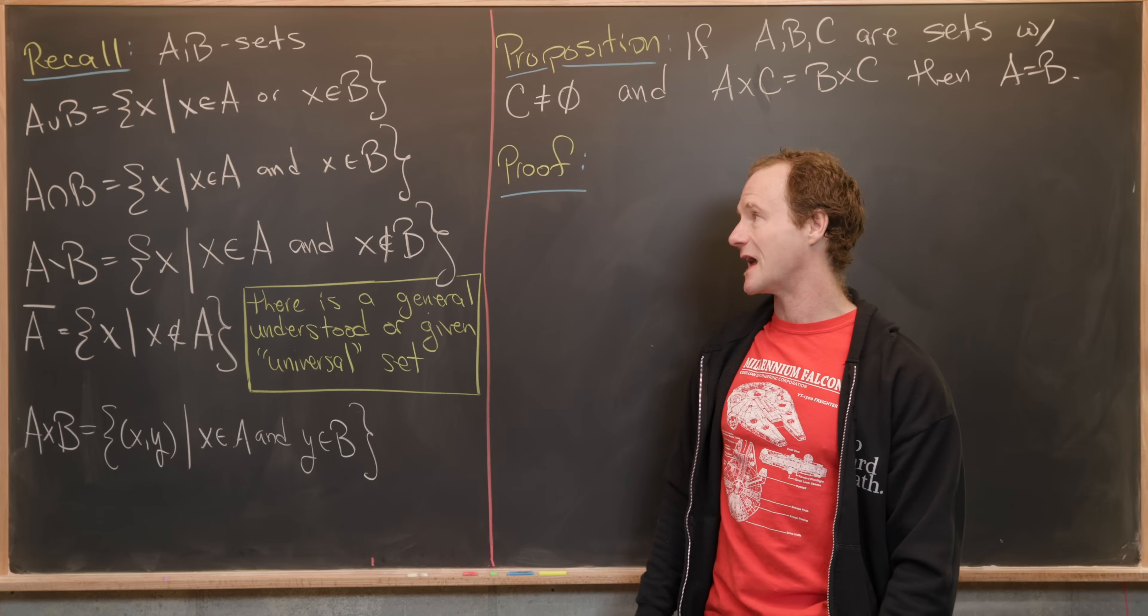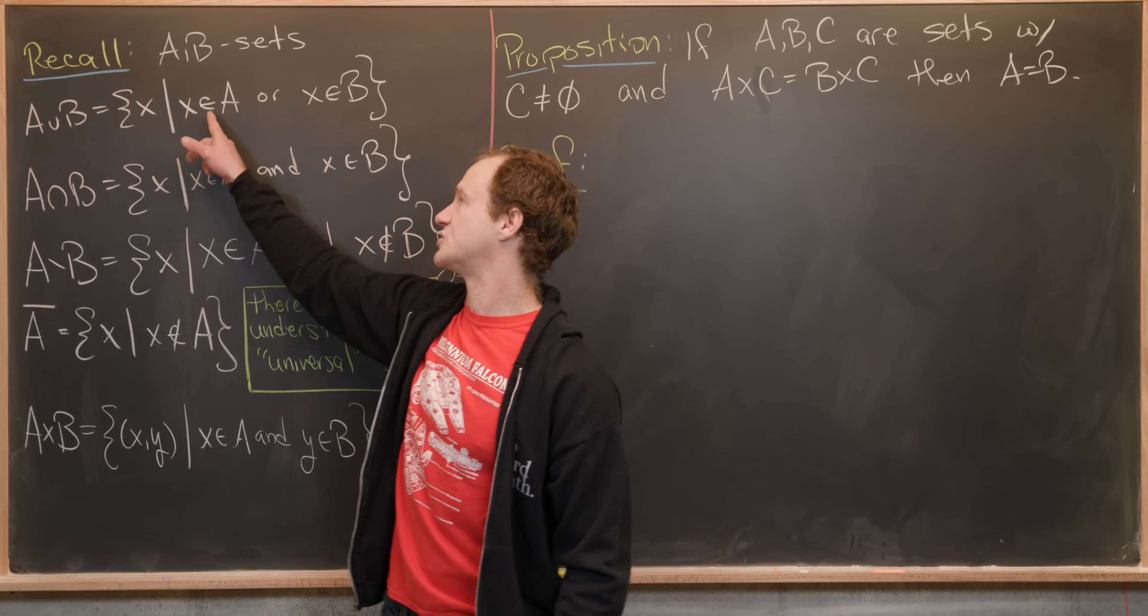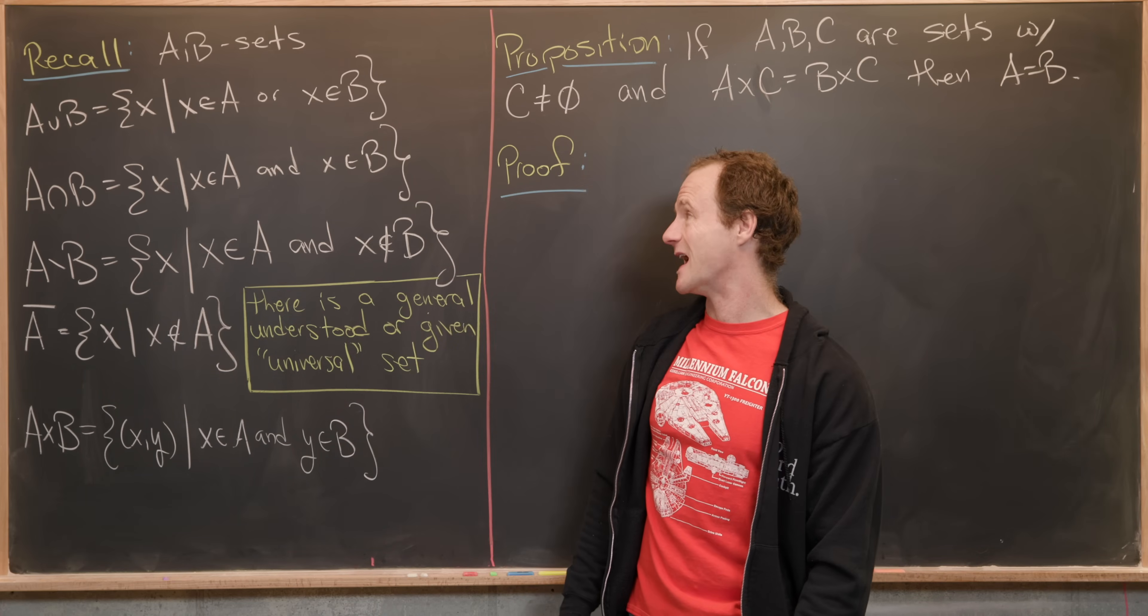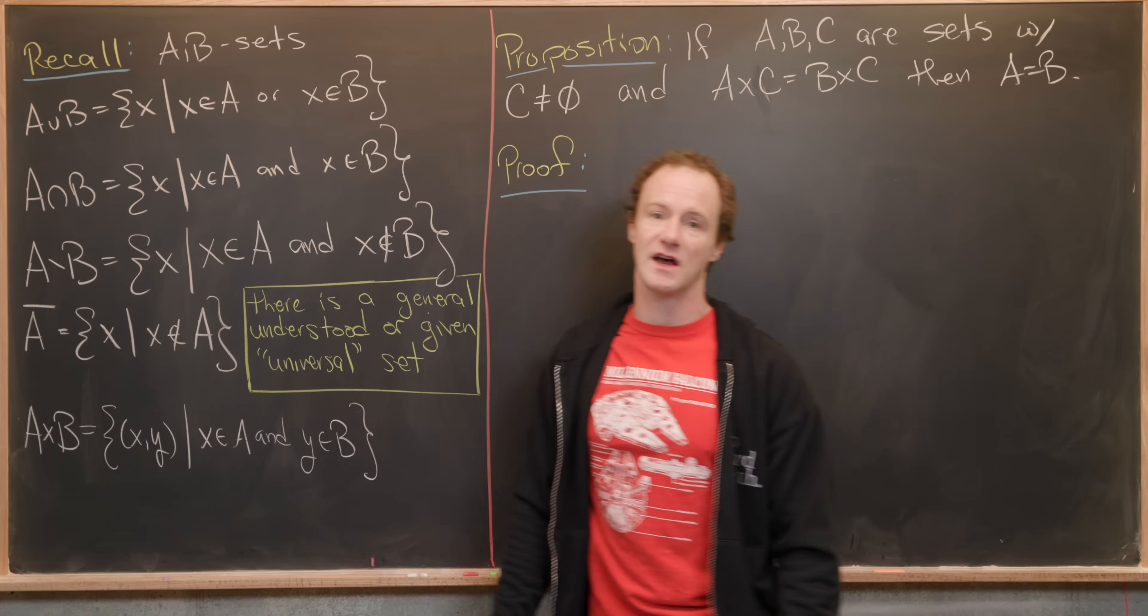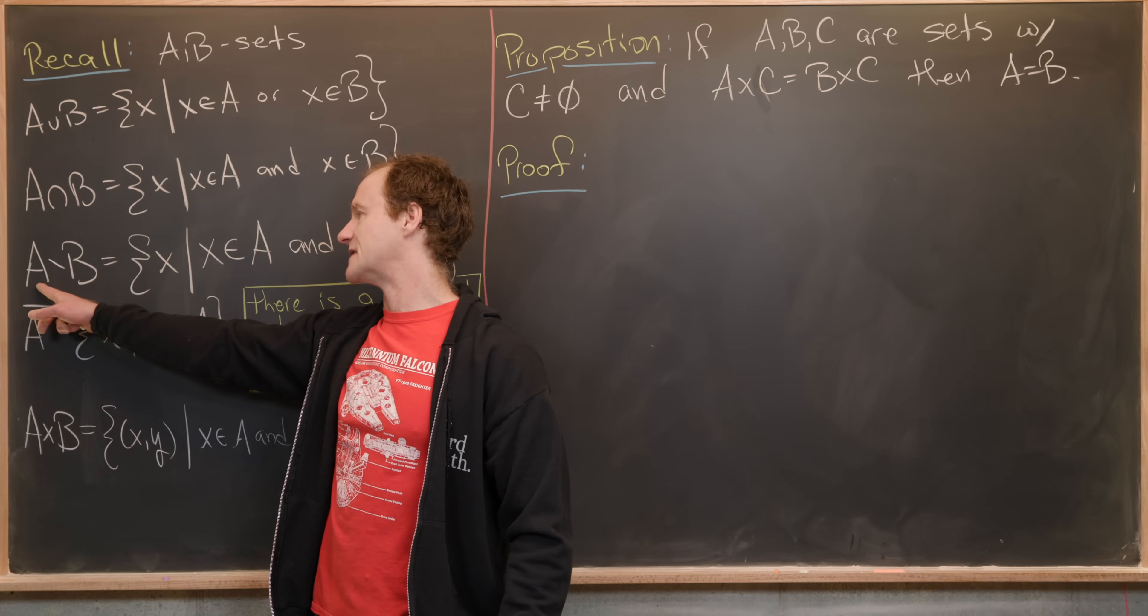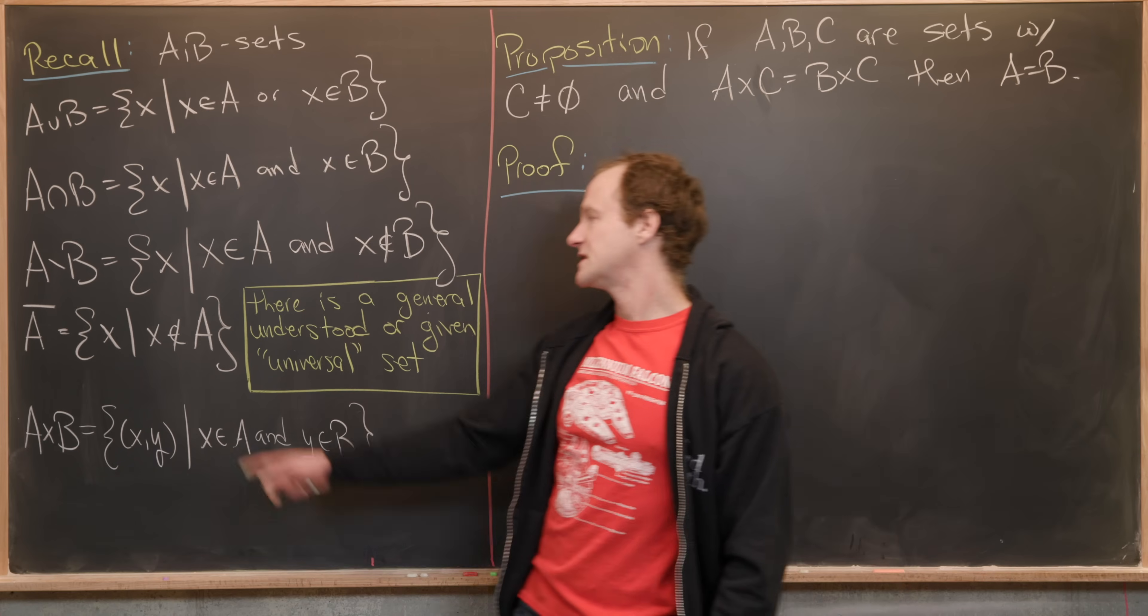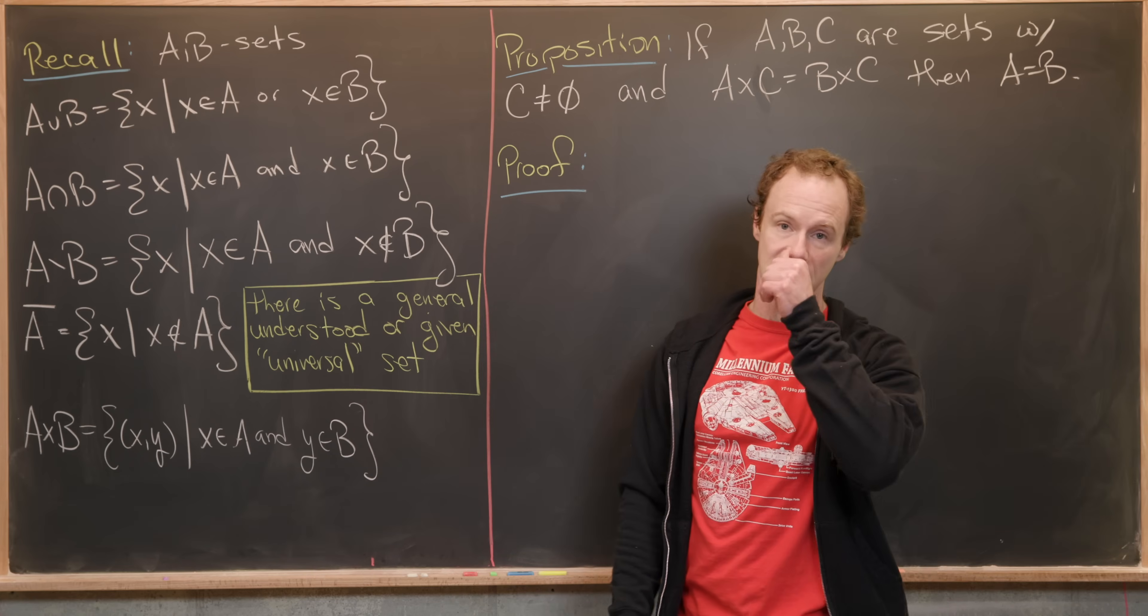So let's say we've got two sets A and B. The union of A and B, those are all elements X such that X is in A or X is in B. The intersection of A and B, that's all elements X such that X is in A and X is in B. The set difference of B from A, so A minus B, is all elements X such that X is in A and X is not in B.